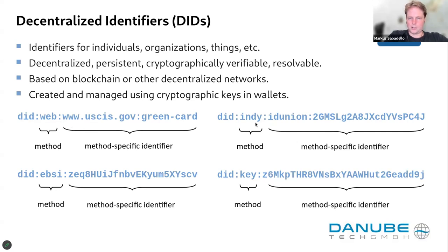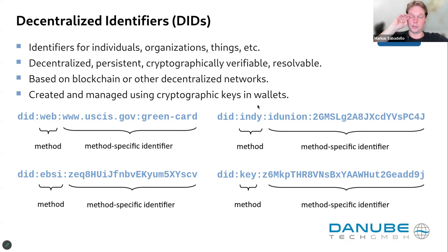Whereas did:websey and did:indy are DID methods based on blockchains or distributed ledgers. If you create a DID using the did:indy or did:websey method, then the DID exists on a distributed ledger, but it's always controlled by you — by your private keys, by software like a wallet where those keys and DIDs are managed. Another popular DID method is one where the DID is actually just a public key, essentially — a form of DID where the public key itself serves as the identifier.